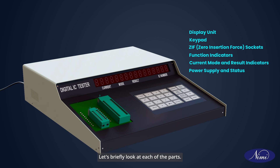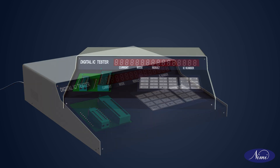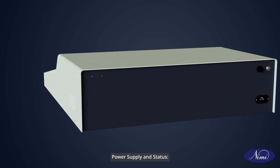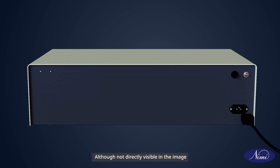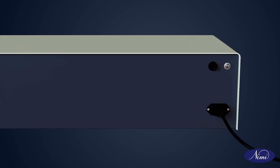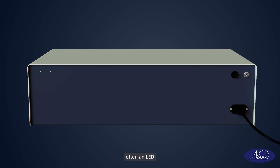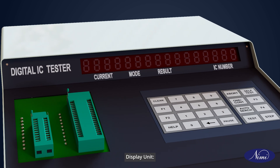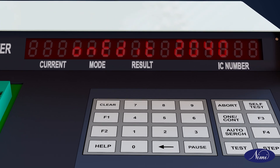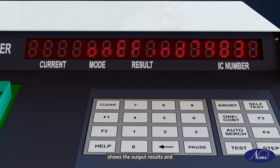Power supply and status: Although not directly visible in the image, there will be a power supply input and a power status indicator, often an LED, that indicates when the device is powered on. Display unit: The alphanumeric display at the top shows the output results.